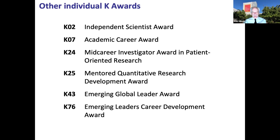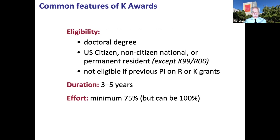There are also niche awards worth considering — for example, those directed at quantitative research gaining experience in biomedical sciences, or biomedical scientists gaining experience in quantitative research. These are not supported by all NIH institutes. Here are the common features across all K awards: you must have a terminal doctoral degree such as a PhD, MD, or DNP. For most awards except the K99R00, you must be a U.S. citizen, non-citizen national, or permanent resident. You're not eligible if you have previously been a PI on an R or K grant.